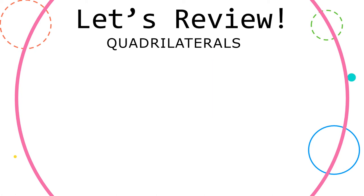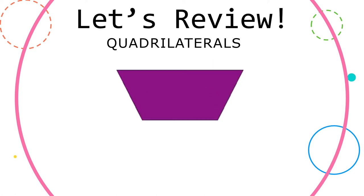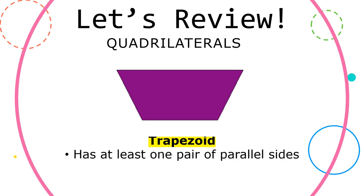Let's take a look at one more quadrilateral — it's a trapezoid. Trapezoids have at least one pair of parallel sides.